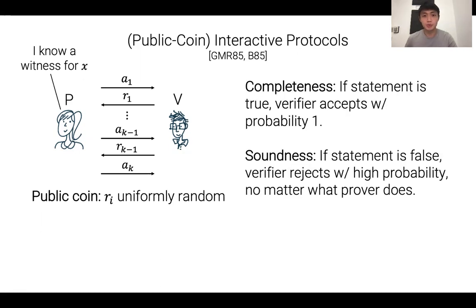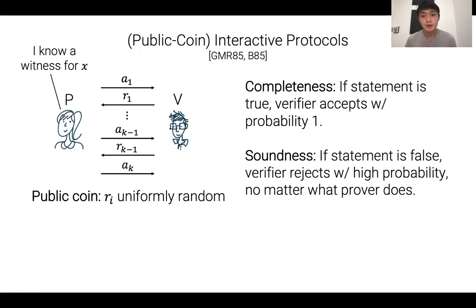There are two properties we always want to satisfy: completeness and soundness. Completeness says that if the statement is true, then the verifier should accept with probability one. Soundness says that if the statement is false, then the verifier should reject with high probability, no matter what the prover does, even if it deviates from the protocol.